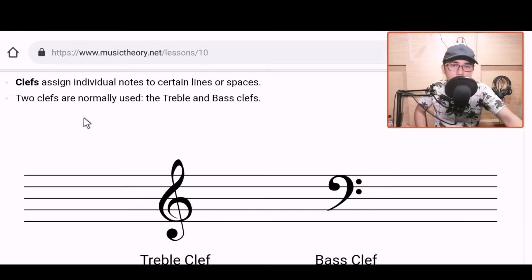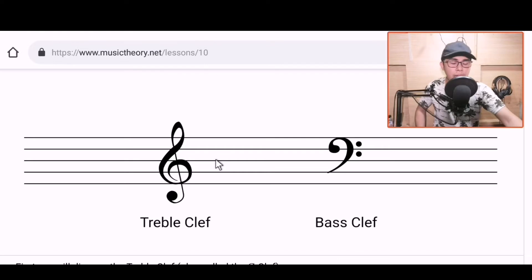Next is the clefs. The clefs assign individual notes to certain lines or spaces. Two clefs are normally used: the treble and the bass clefs. For the piano guys, some of you play guitar, others play piano. For those who play piano, we have two types of clefs. We have the treble clef and the bass clef. For guitars, it's commonly treble clef. We don't have bass clef on guitar. Yeah, on guitar we mostly use treble clef. Bass clef is rare because sometimes the lower strings go beyond the very low parts.